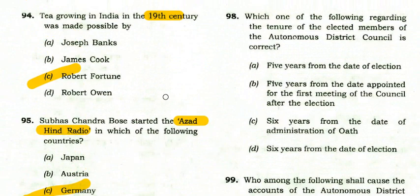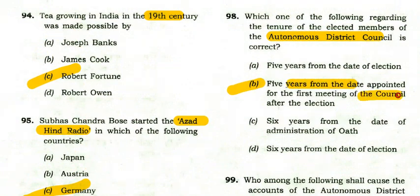Which statement regarding the tenure of elected members of the Autonomous District Council is correct? The tenure is five years from the date appointed for the first meeting of the council after the election.